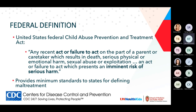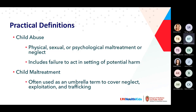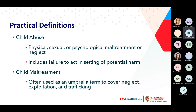Jumping into some definitions — there are many different definitions of abuse. I tend to revert to the federal definition. Every state has nuances, but the overarching definition is: any recent act or failure to act on the part of a parent or caretaker resulting in injury to a child, or failure to act that presents an imminent risk of serious harm. Practically speaking, child abuse includes physical, sexual, or psychological maltreatment or neglect, including failure to act in the setting of potential harm. Child maltreatment is a broader term covering neglect, exploitation, and trafficking.